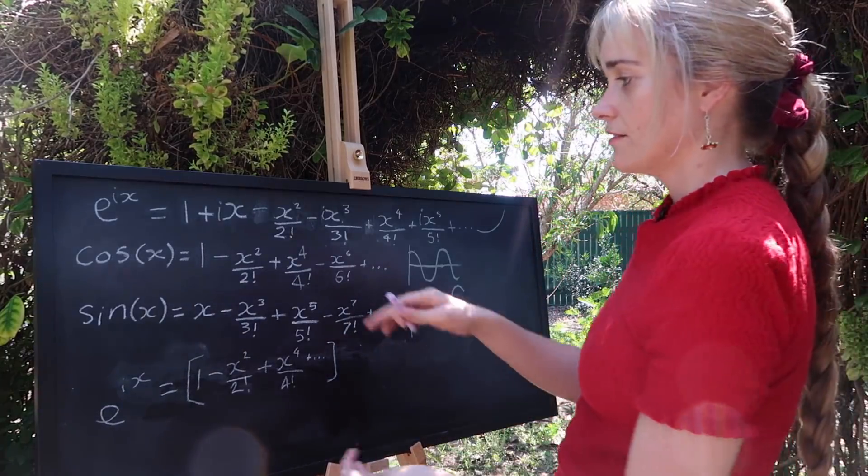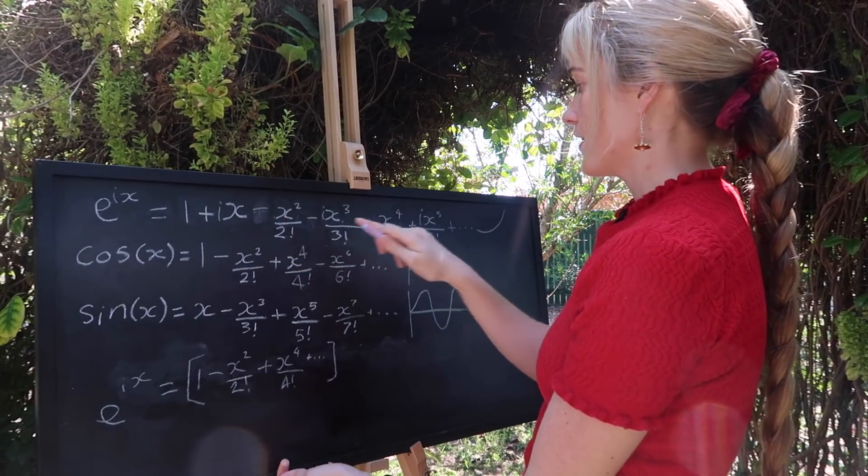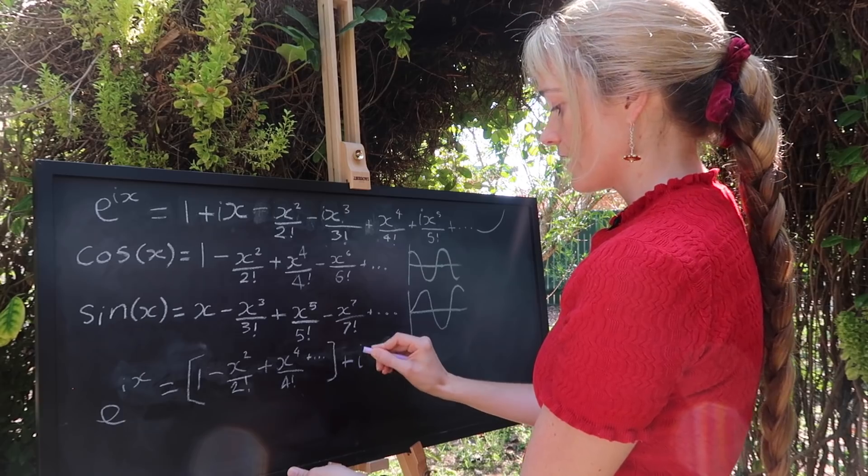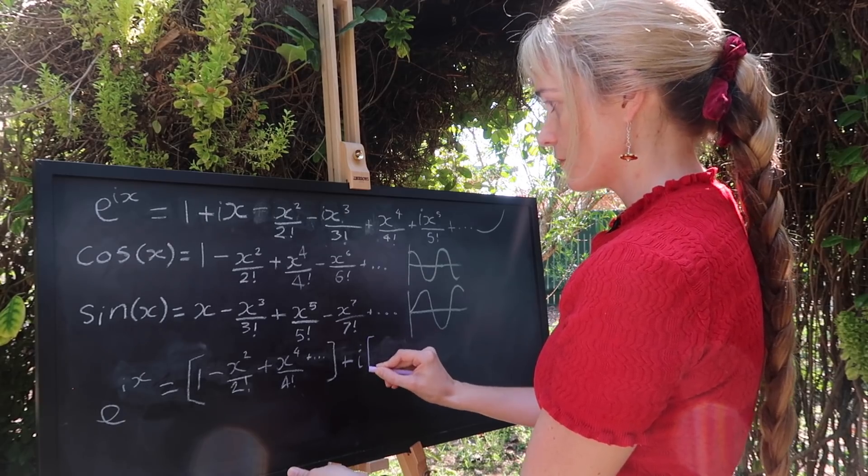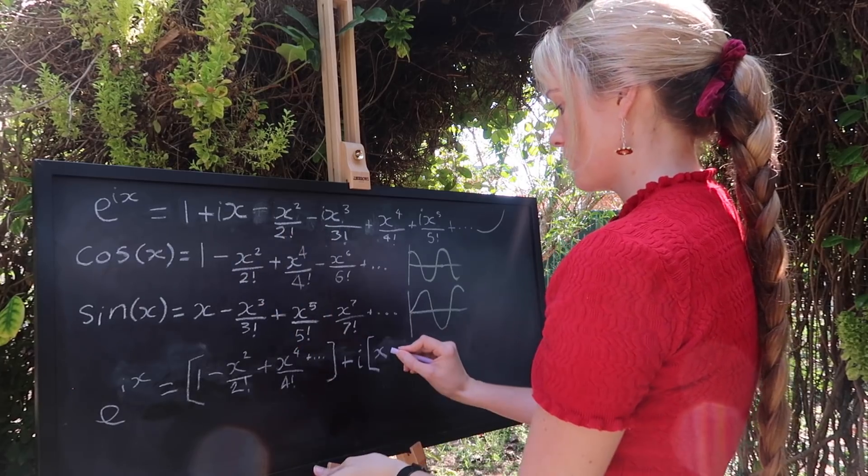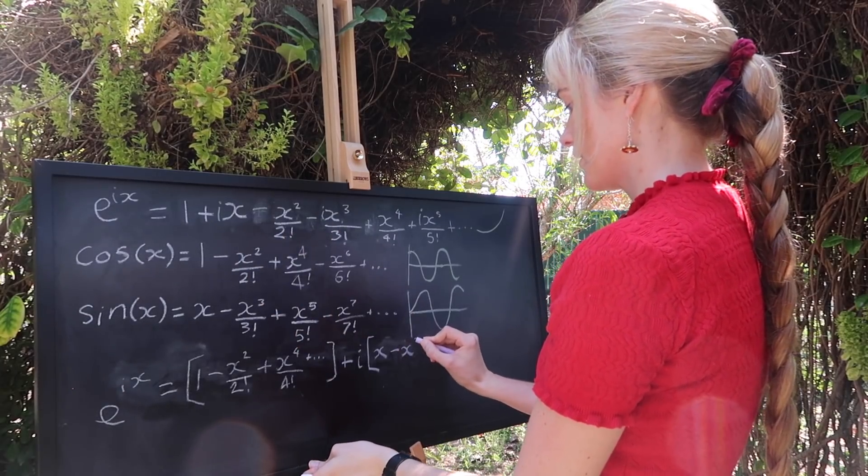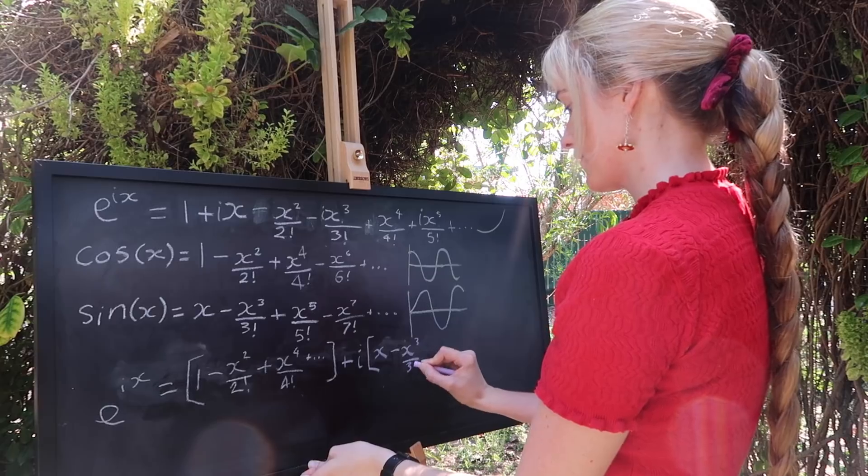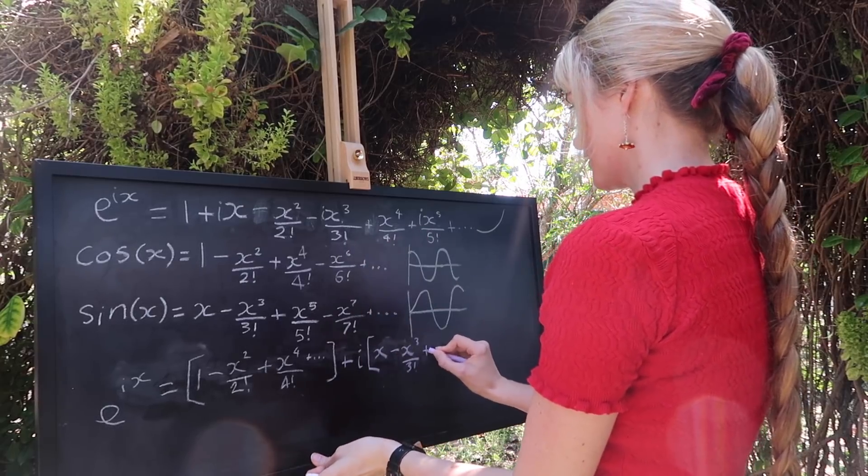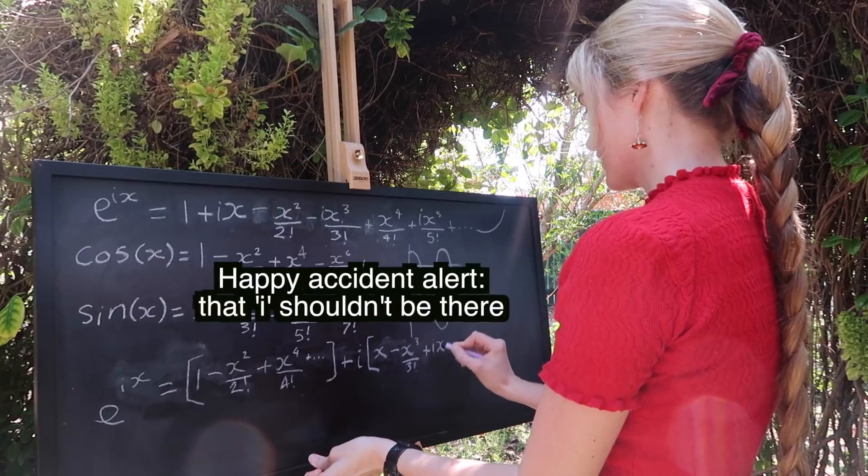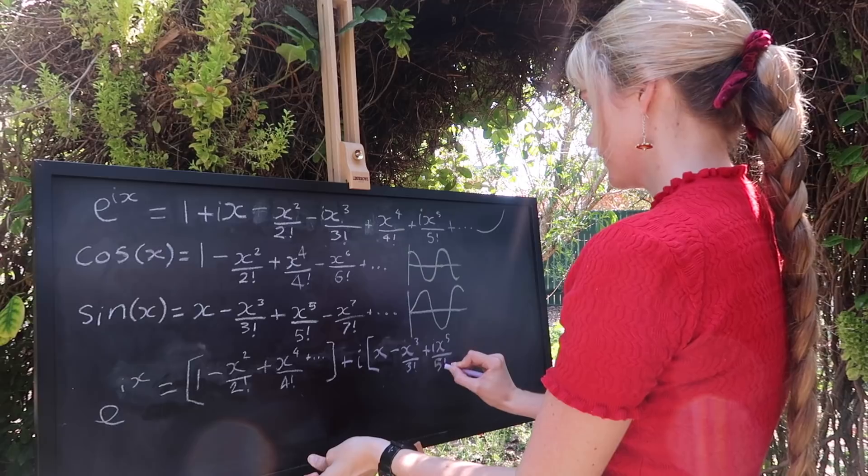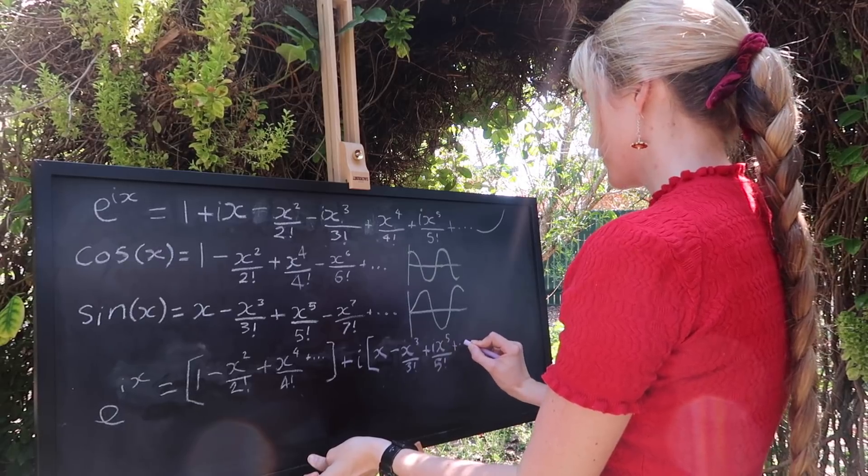Let's do our imaginary ones now. All of our imaginary terms are going to have this i out the front. So in fact we can just take the i out the front of our brackets. What have we got? An x minus x cubed over 3 factorial plus x to the 5 over 5 factorial. And an infinite number of those terms.